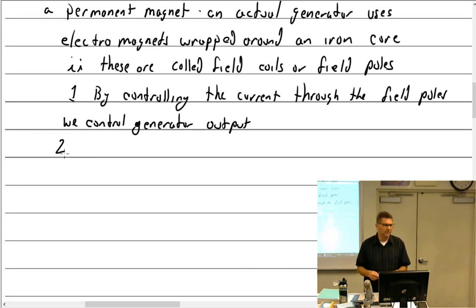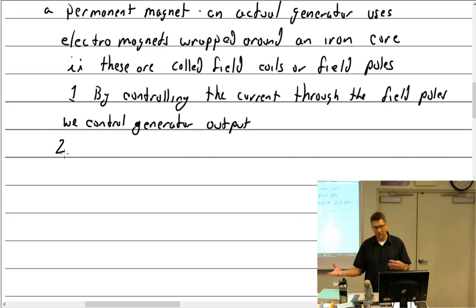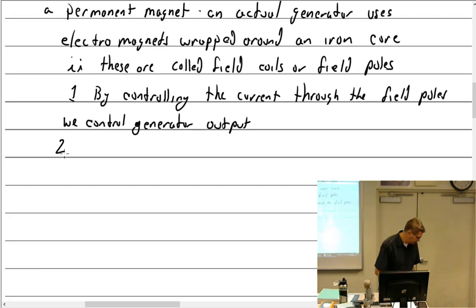Unlike an alternator, which needs battery voltage to come in and excite the field, the generator is self-exciting. So if you had a completely and totally dead battery, you'd rather have a generator — it will get going all by itself.